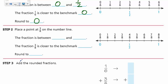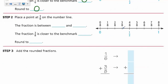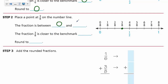Step two: place a point at three-eighths on the number line. The fraction three-eighths is between zero-eighths and four-eighths. We call four-eighths by its benchmark name: one-half. The fraction three-eighths is closer to the benchmark one-half — you can see that by looking at the number line. So we're going to round three-eighths to one-half.